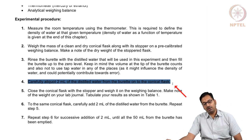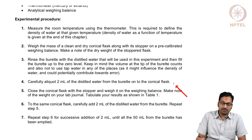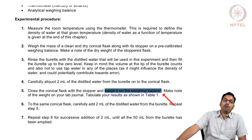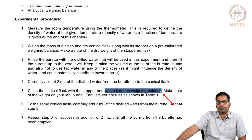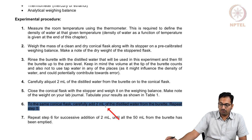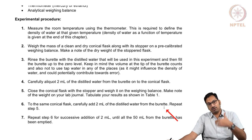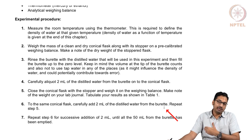Now the experiment begins: you carefully aliquot 2 ml of distilled water from the burette to the conical flask. After doing that, close the conical flask and weigh it again on the weighing balance. Since you weighed the empty conical flask and now weigh it with the 2 ml addition, you can determine how much mass of water was added. Using the density you convert mass to volume and determine how much volume you expected to add versus how much you actually added, helping you calibrate the burette. Repeat this task by adding 2 ml of water again and again until you have a certain number of measurements.